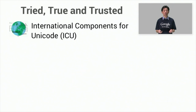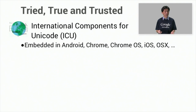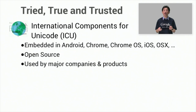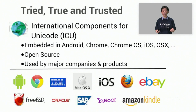Tried, true, and trusted — ICU is a mature, widely adopted library with quite extensive features. It's embedded in Android, Chrome, and other companies' platforms. Because it underpins APIs on these platforms, you might be using ICU indirectly. And it's open source — free for anyone to use. It's used by major companies and major products.